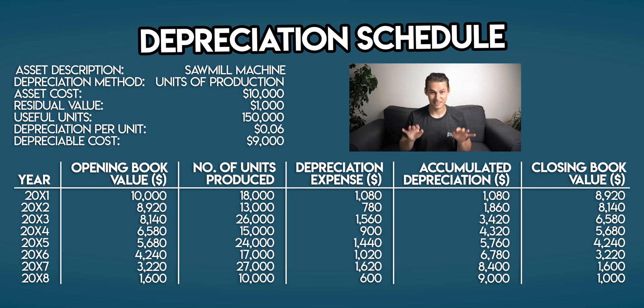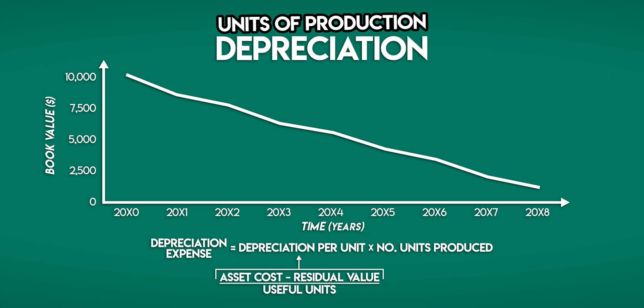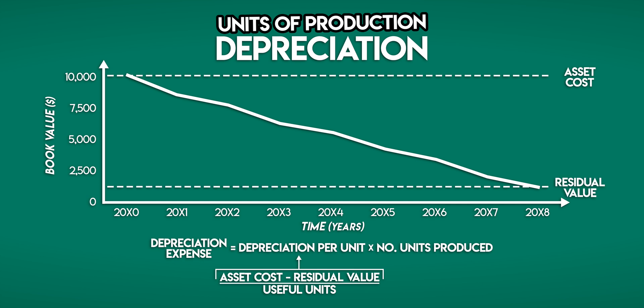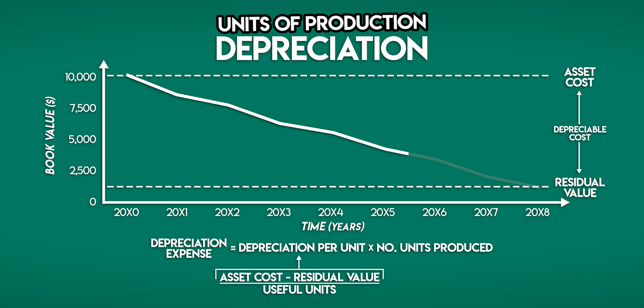If we repeat this process for the next few years, notice that your depreciation expense changes each year in proportion to the number of units produced. We can see this better on the graph, which shows your sawmill machine's book value over time. Your asset cost is $10,000, its residual value is $1,000, and your depreciable cost is $9,000. Under the units of production method, your depreciation expense is variable because it mirrors your actual physical use of the asset. All of this is outlined on the depreciation cheat sheet — see you next time.